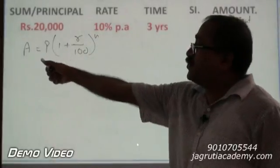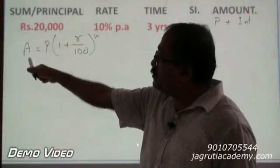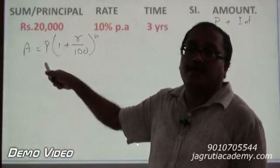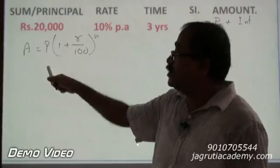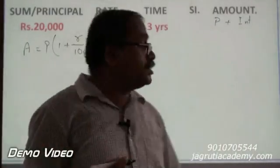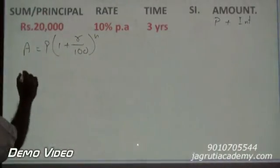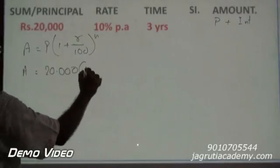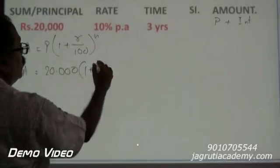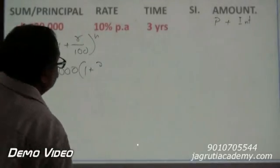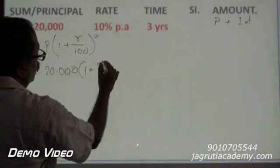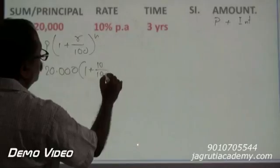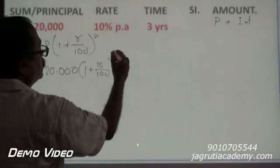By using this formula, we will get amount and from amount, if I take out principal, I get interest. So, let's work out this. A is equal to P that is 20,000 into 1 plus R which is rate of interest 10% by 100 to the whole power N which is 3 years.